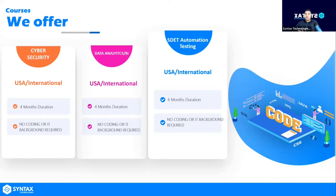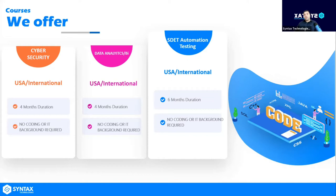Let me give you a very basic example. Whenever a new iPhone comes out with a new software update, there are a lot of problems — buttons not working, errors, and issues. Or think about the new PlayStation 5, which had a lot of problems. Any software that comes out has issues. There's an individual who creates that software, and then there's an individual who finds the issues in that software. That's automation testing — finding all the flaws in a system.